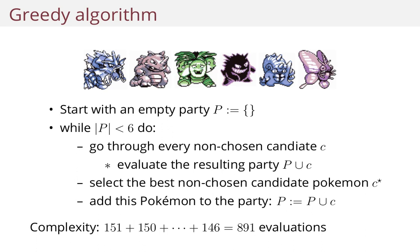The complexity is low as well. In the first iteration, you have to consider every 151 Pokemon; in the second one, you have chosen one, so you have to consider 150 Pokemon. This amounts to around 900 evaluations, which is nothing — it's instantaneous, basically. So this is not a problem. But it's not the optimal party.